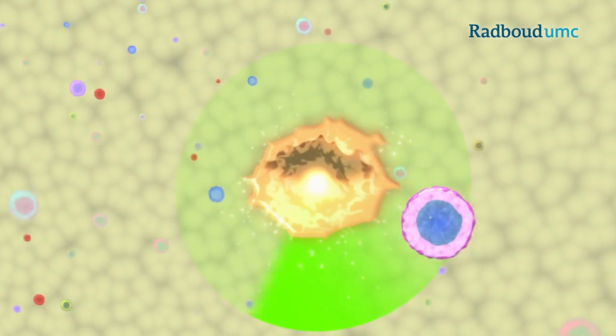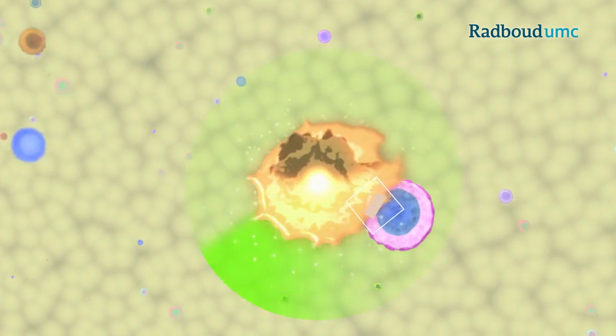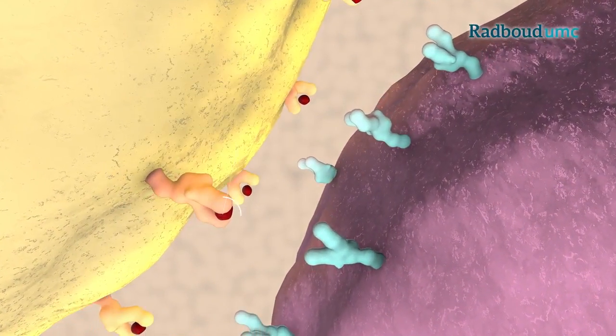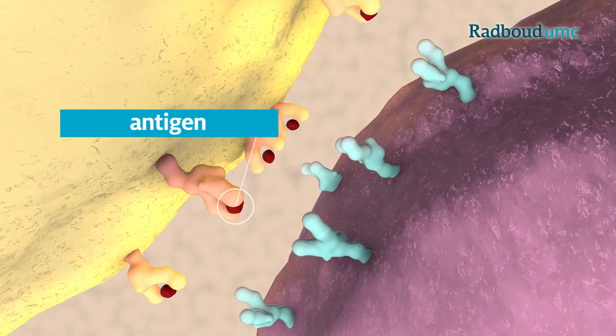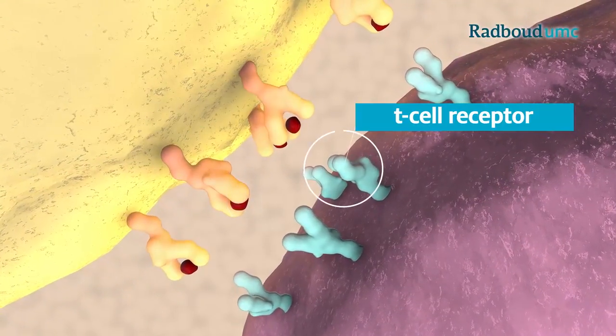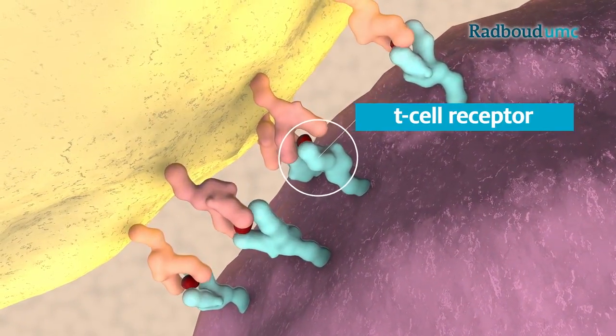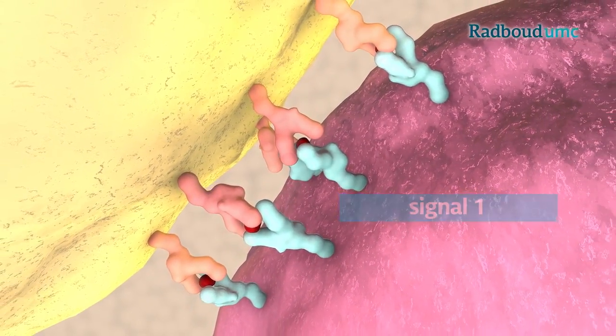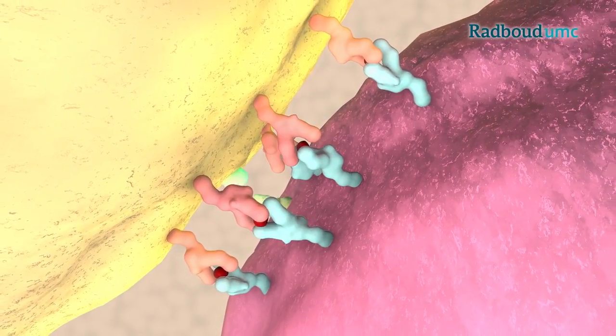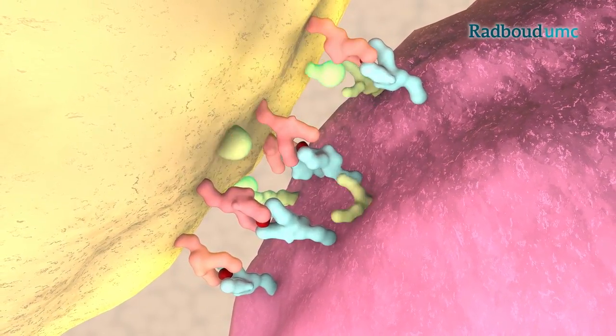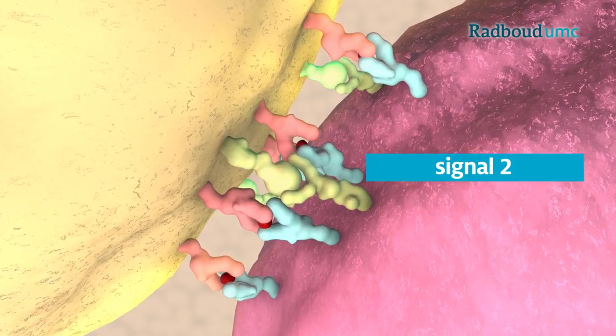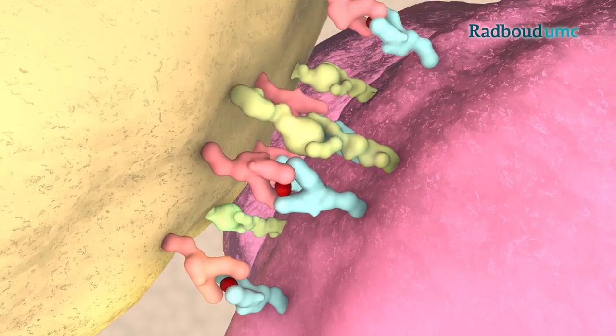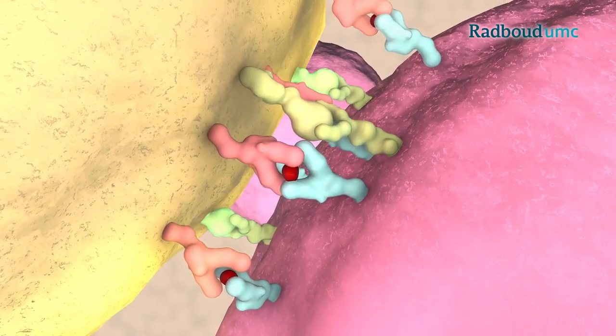When the killer T cells recognize the presented tumor antigen, a three-step activation process is initiated. First, successful recognition of the presented tumor antigen by the T cell receptor initiates the activation program in the T cell. Long-lasting contact between these two cells allows the transmission of co-stimulatory signals based on interacting structures on the cell's surfaces. These co-stimulatory signals further enhance and promote the activation of the killer T cells.